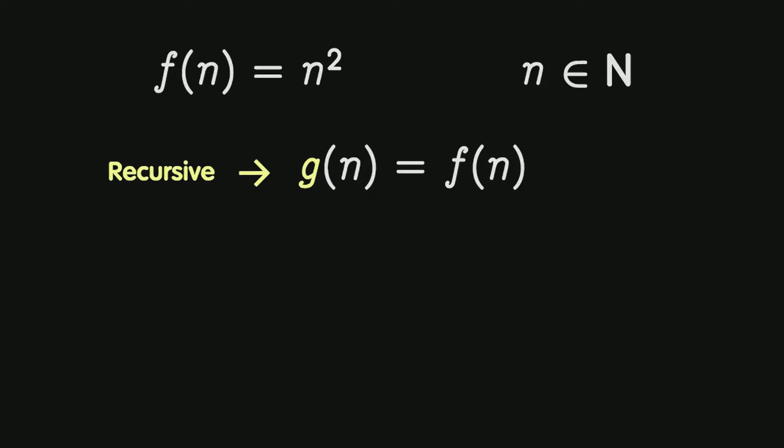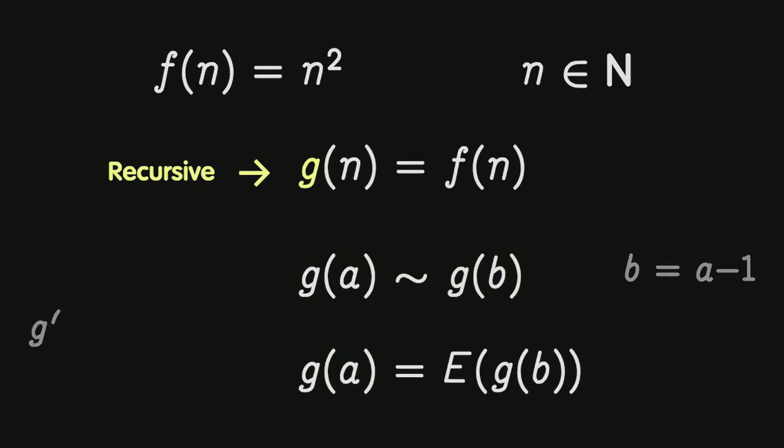A recursive function is a function that works with the association of its own values. For example, if we want to know the value g of a, what we have to do is associate it with another value g of b, where b in most cases is equal to a minus 1. So our goal will be to turn this into an equality. This is read as g of a is somehow equivalent to g of b. Well, the idea is that g of a is equal to an expression that includes g of b. In other words, g of a is not equal to g of b, but in its definition g of b is going to be present.